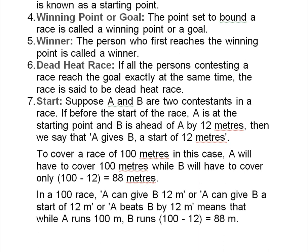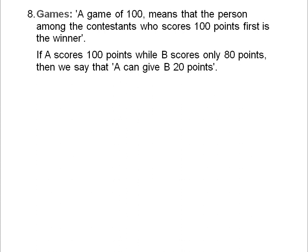Games: A game of 100 means that the person among the contestants who scores 100 points first is the winner. If A scores 100 points while B scores only 80, we say that A can give B 20 points. We have seen the concept of races and games and now we'll move on to questions to be more clear with the concept.